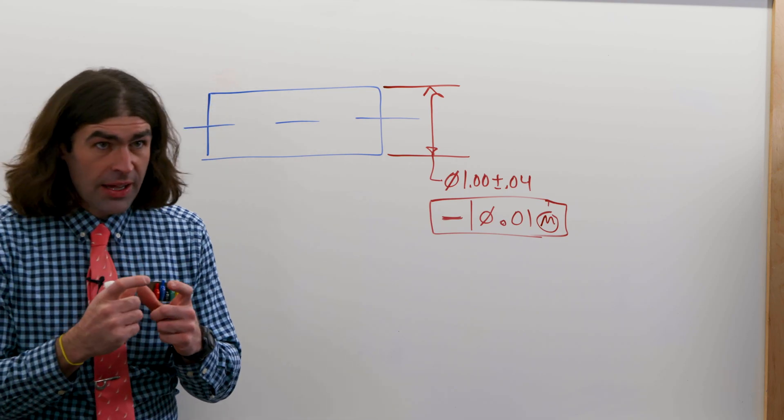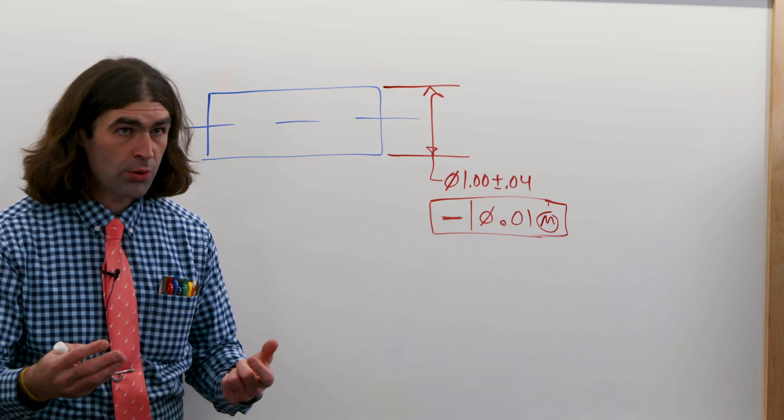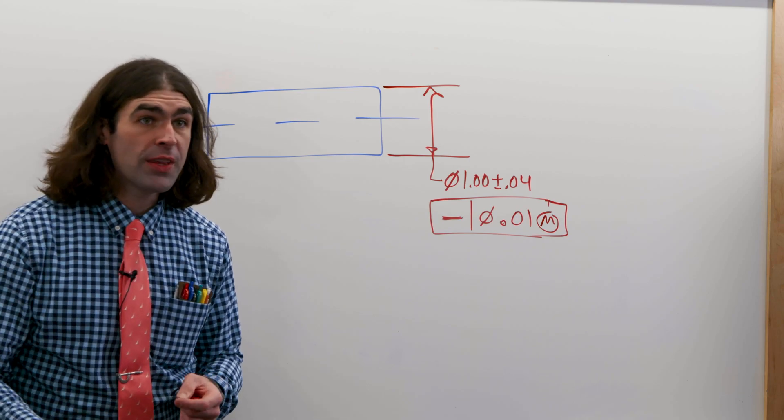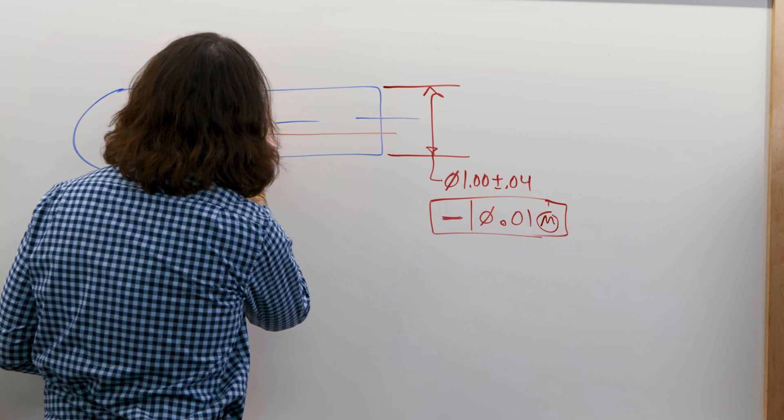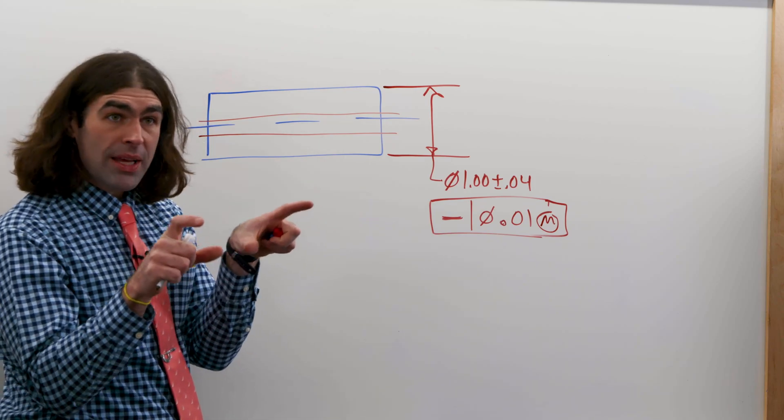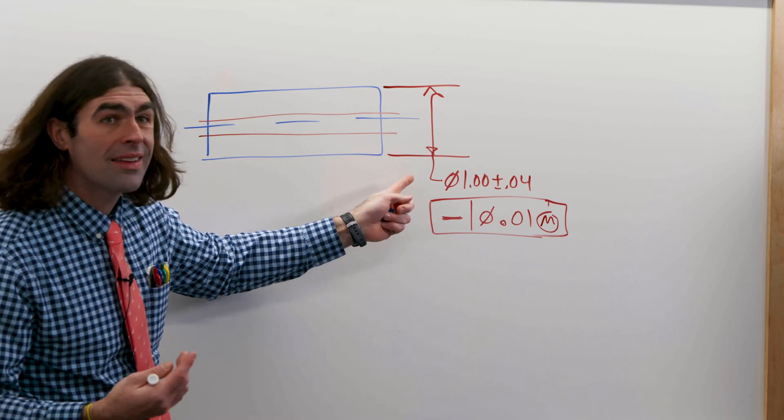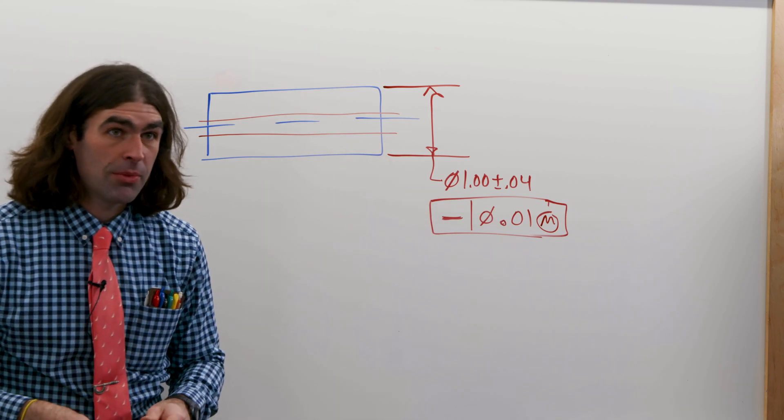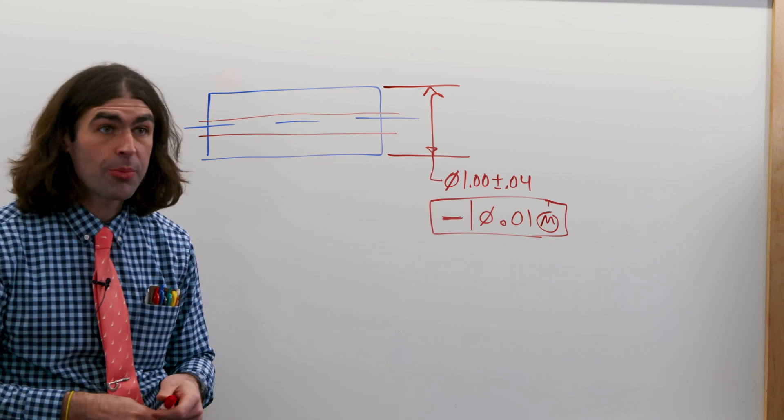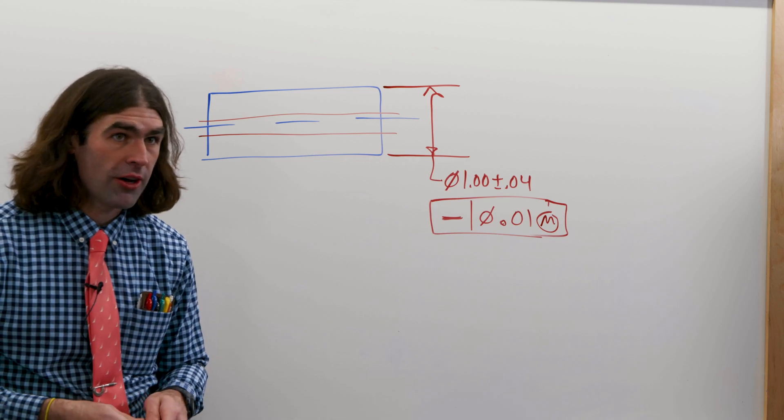One thing to notice here is whenever you apply a straightness tolerance to a derived median line, you're giving it more tolerance than you would if you just used plus or minus dimensions. So what it's doing is violating the MMC boundary. If you think about it, if you have a ten thousandths tolerance zone going through the part right here, so the part comes in at MMC and it can bend ten thousandths, that means it can take up more than its MMC. It can take up 1.06. So it violates MMC. I have a whole other video that I go into more detail about this and I'll put a card up here so you can watch that if you're interested in the difference between a derived median line and an axis.